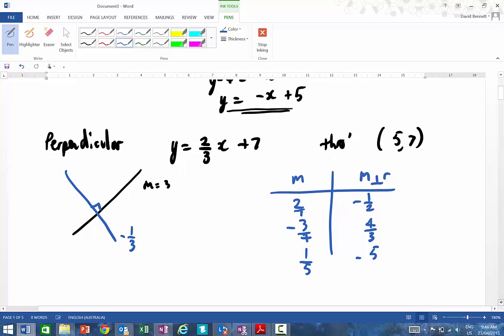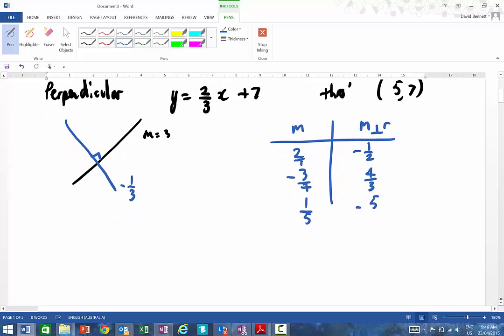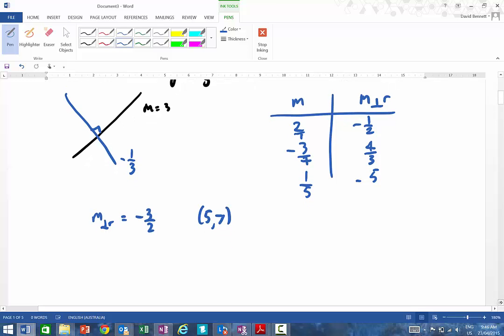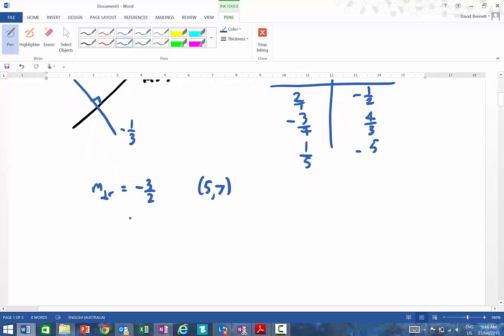So, in this particular case, I know the slope of my perpendicular line is going to be equal to minus 3 on 2. And so, once I get that information, it's now automatically into the equation. Y minus 7 over x minus 5 equals minus 3 on 2. And then I cross multiply. Now, it doesn't matter which way you do this.